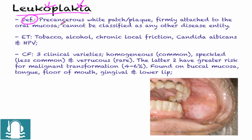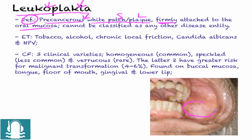The definition of leukoplakia is a precancerous lesion which is white and comes as a patch or a plaque. A plaque is slightly larger than a patch. It is firmly attached to the oral mucosa — meaning it does not come off — and it cannot be classified as any other disease entity, as seen in this picture of a large plaque on the buccal mucosa.